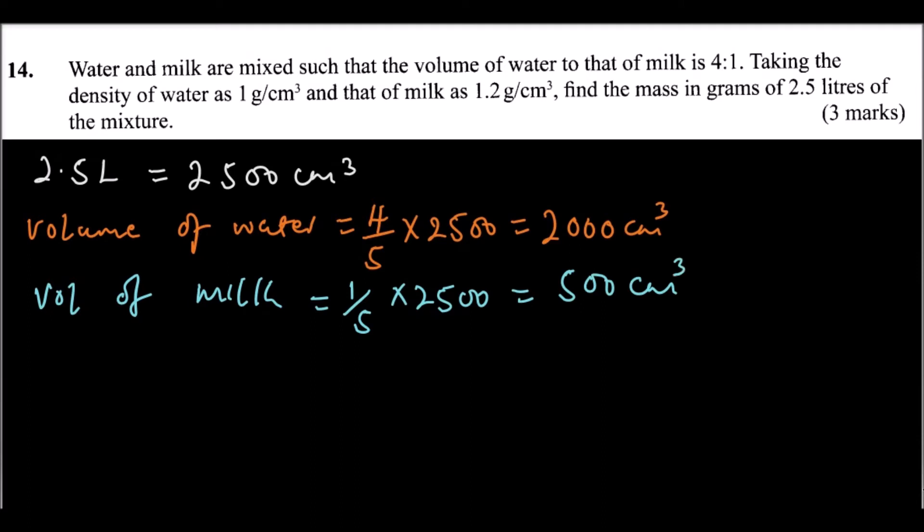If we want to get mass of water, to get mass, we multiply density by the volume. So, density of water is 1 gram per centimeter cube. You multiply by the volume, which we have found, it is 2,000 centimeter cube. So, you find that this centimeter and that centimeter cancels. So, it means the mass that we get is 2,000 grams.